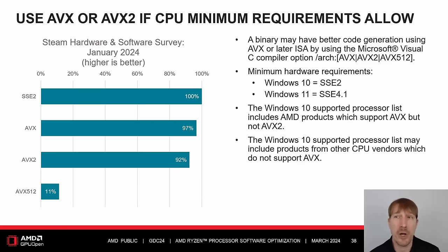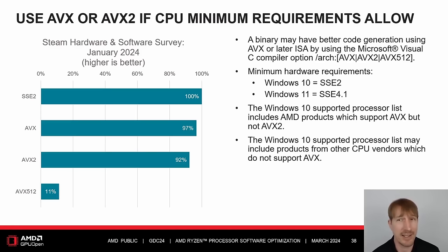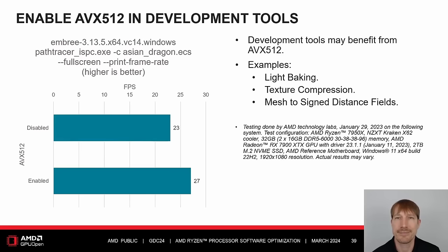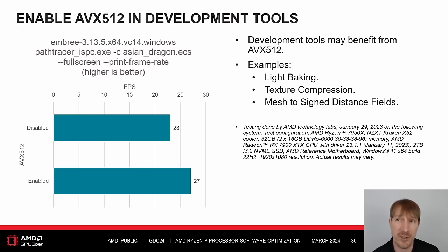A binary may have better code generation using AVX or later ISA by using the Microsoft Visual C++ compiler option /arch:AVX, AVX2, or AVX512. The minimum hardware requirements for Windows 10 include SSE2. For Windows 11, it's only SSE 4.1. The Windows 10 Supported Processor list may include AVX512 in development tools such as light baking, texture compression, and mesh to signed distance fields. We observed a 17% performance increase thanks to AVX512 while using the Intel Embree Path Tracer with ISPC.